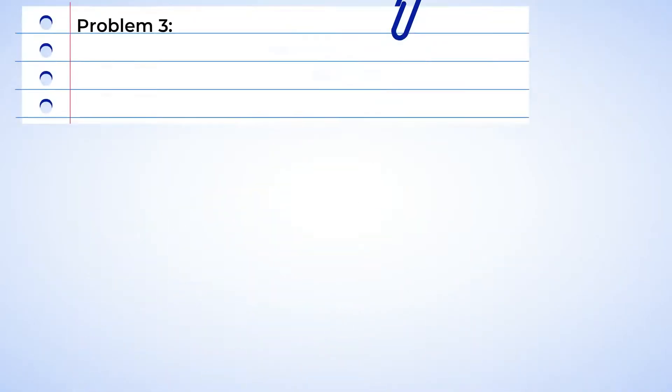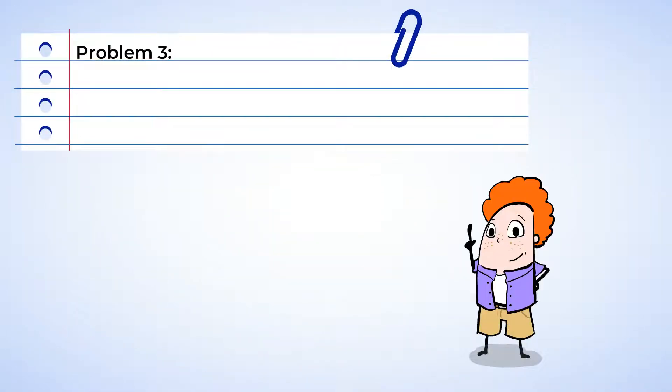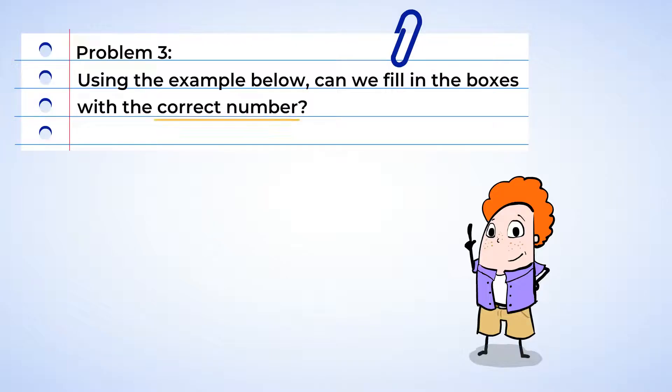Hey, what do you say we team up with Eric and solve some mighty problems together? Using the equations below, fill in the boxes with the correct number. All right, we can help Eric with this. For the first equation, we have something multiplied by three equals two. And if we are multiplying and getting a smaller number, then we must be multiplying by a fraction. So let's rewrite the multiplication problem as a division problem.